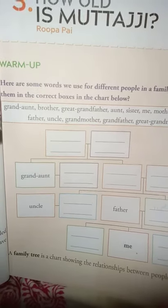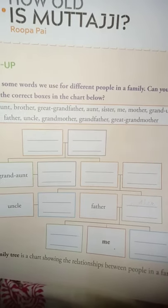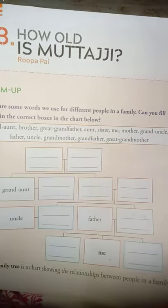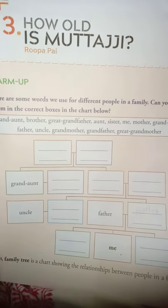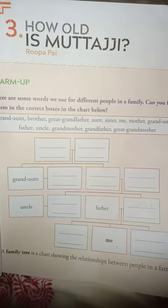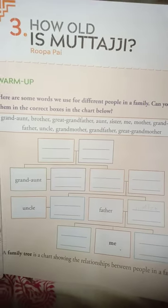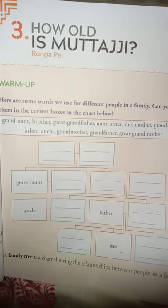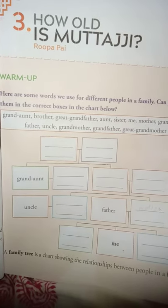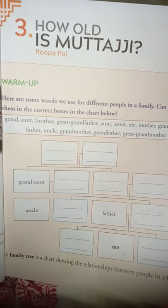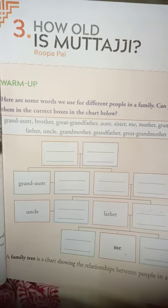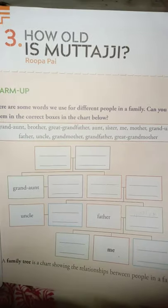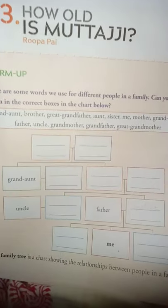Here you can see a block where a chart is shown to you. It is called a family tree, which shows the relationship between the people in a family. There are members like grand aunt, brother, great grandfather, aunt, sister, yourself, mother, father, grand uncle, grandmother, and great grandmother. In the picture you can see two blocks, then four, then four and three — starting with grandparents, then elder members, then mother, father, yourself and your sibling, arranged according to age.